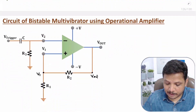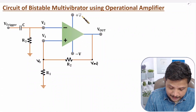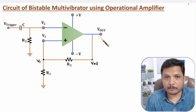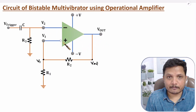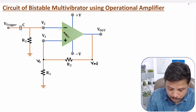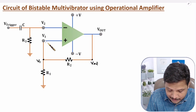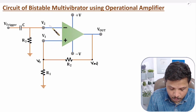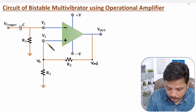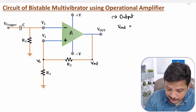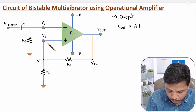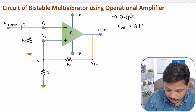Now let me explain you the circuit using operational amplifier. With this circuit, we will be having bistable output. You need to understand this op-amp in differential configuration. Differential configuration means input is given at the negative terminal as well as at the positive terminal. At the negative terminal, voltage is V2; at the positive terminal, voltage is V1.